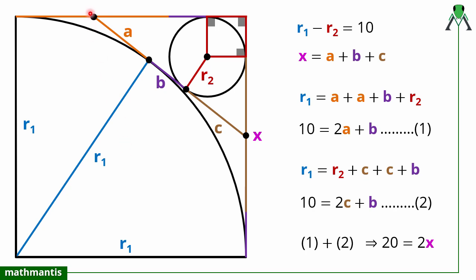The property is that the length of tangent from an external point are always equal. This type of geometrical problem is very common and this property is very useful when you see a length of tangent drawn from an external point to a circle. Thank you so much for watching this video and I will see you in the next video.